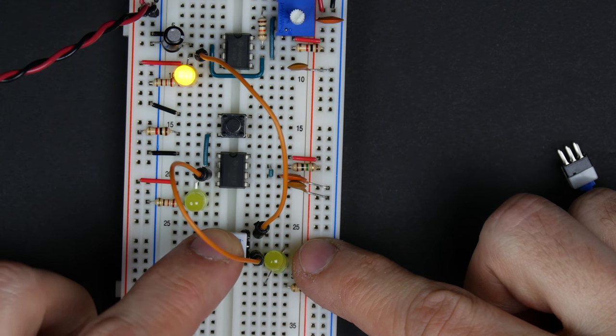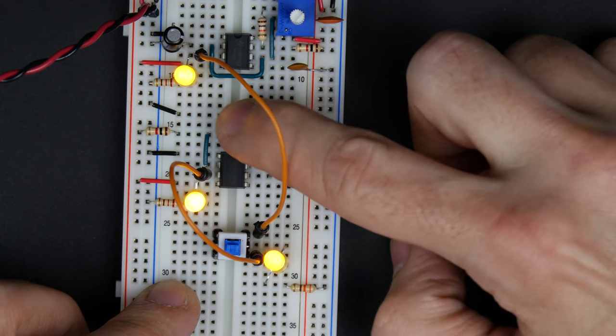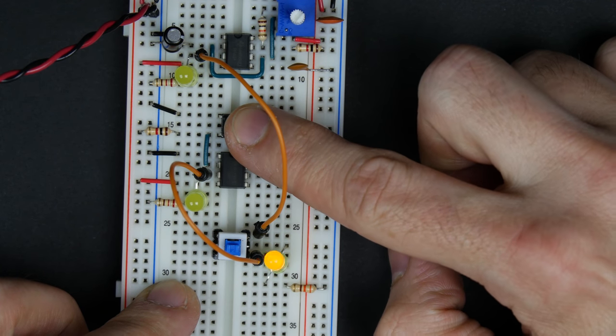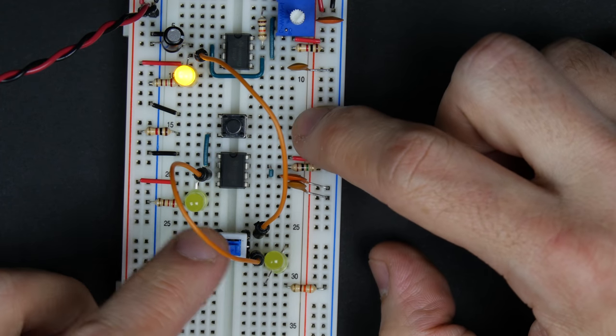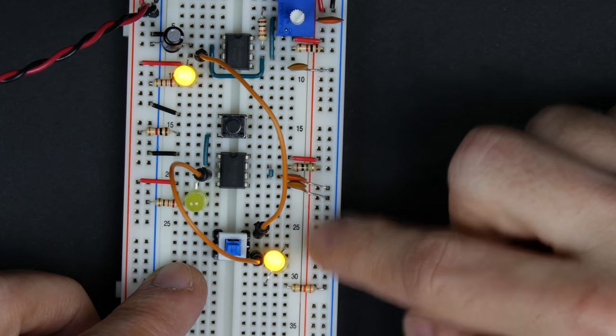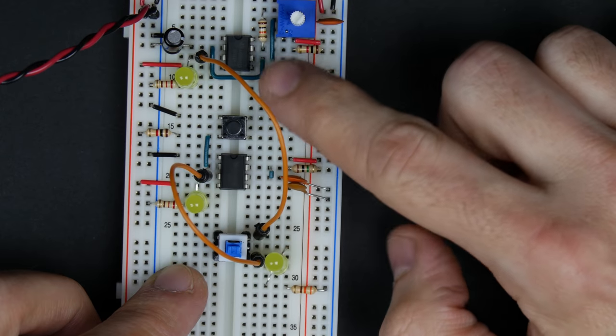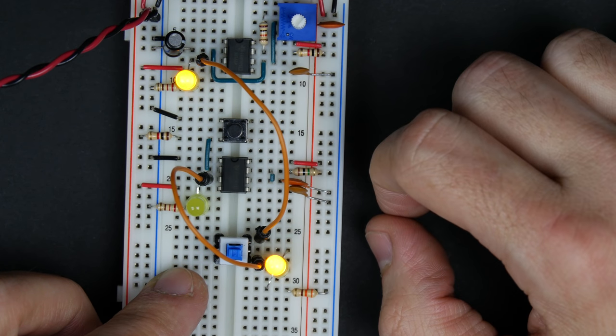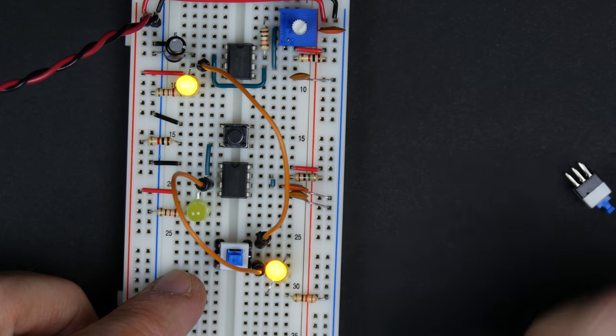And then we could flip the switch here, and now it's connected to our manual clock pulse. And we could flip it back, and it's connected to the sort of automatic clock pulse there. So this is great. We could use this. This will work.